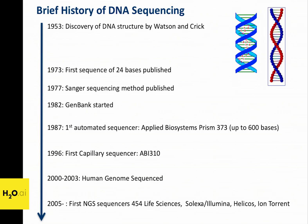A few years later, in 1982, the first database where we store DNA sequences — the GenBank — was funded by NIH. Later on, we got the first automatic machines that allowed us to sequence automatically, able to sequence 600 bases, parallelizing 96 samples. And in 2000, using Sanger sequencing, we published the first human genome. A few years after that, we saw the explosion of next-generation sequencing.